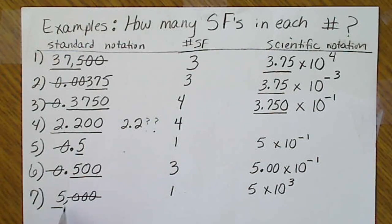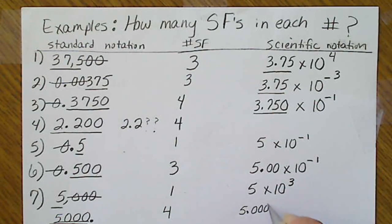If I wanted to write the number 5,000 and show that number to four significant figures, we would actually place a decimal at the end of the number. And that looks kind of strange, but placing that decimal at the end of the number automatically gives us four significant figures. And this number would be 5.000 times 10 to the third.